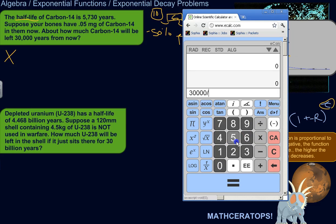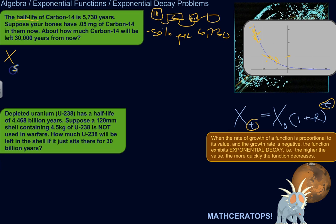30,000 divided by 5,730. So let's just round it to 5.2. So in 30,000 years, it will go through 5.2 half-lives. So the value after 5.2 half-lives will be the initial value, which is 0.05 milligrams, times 1 minus the rate of growth, plus the negative rate of growth. And so we're talking about half-lives here. So the growth rate is negative 50%, which if you were to turn that into a decimal, that would be negative 0.5. So minus 0.5, raised to the power of the number of growth cycles, 5.2.